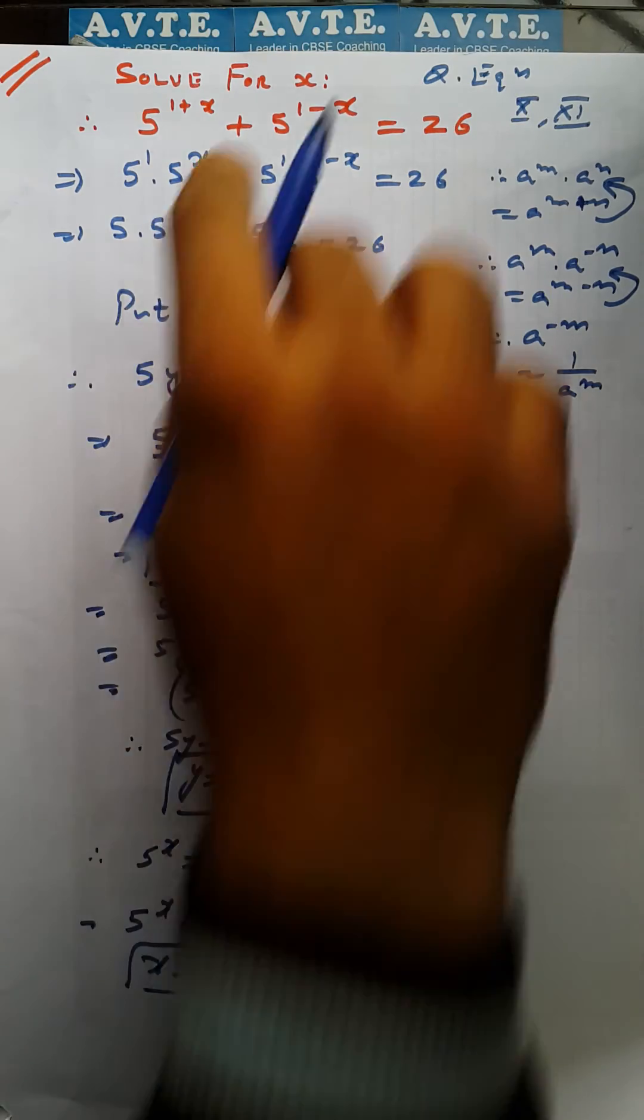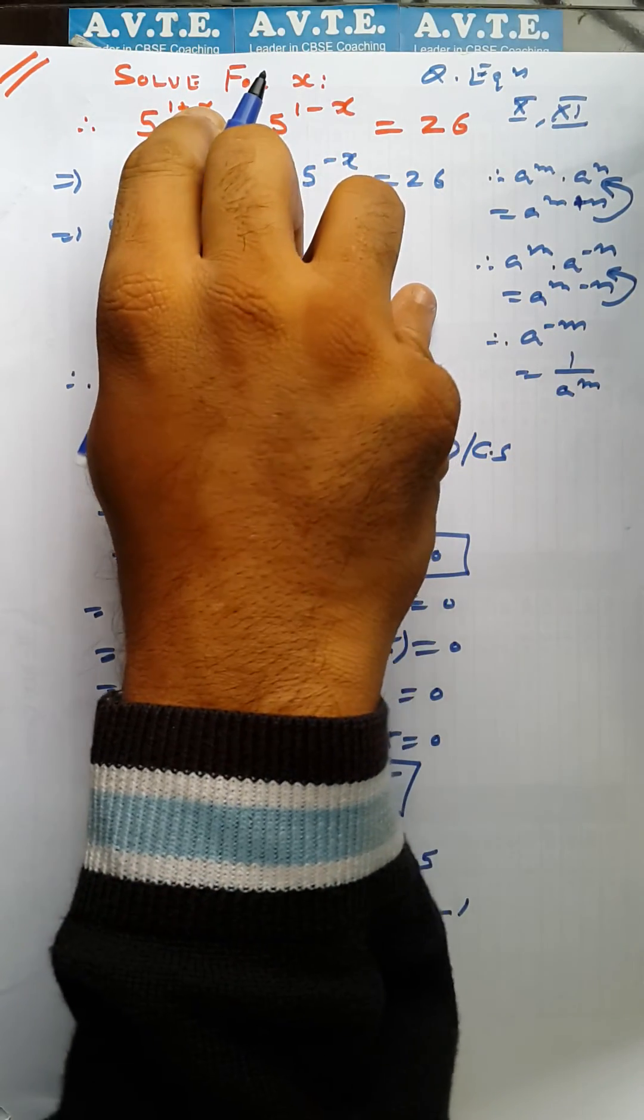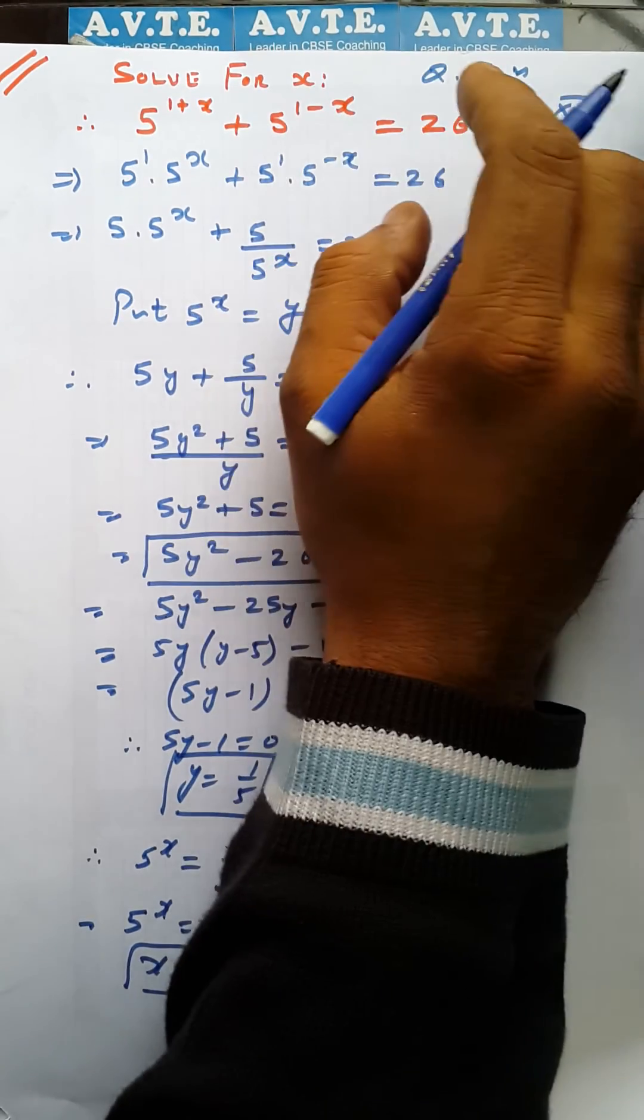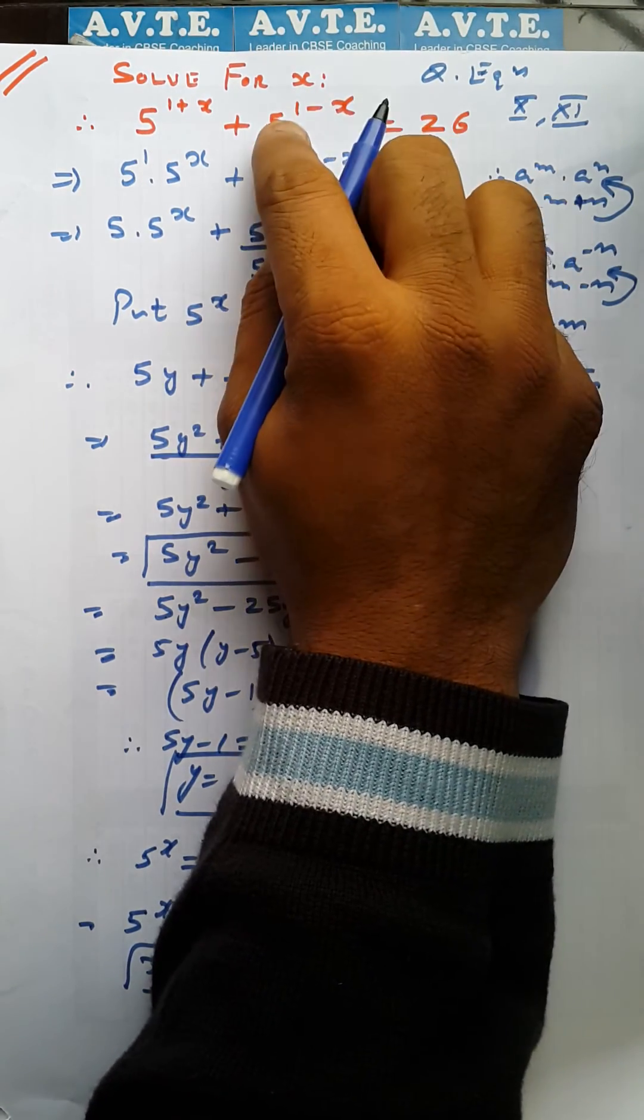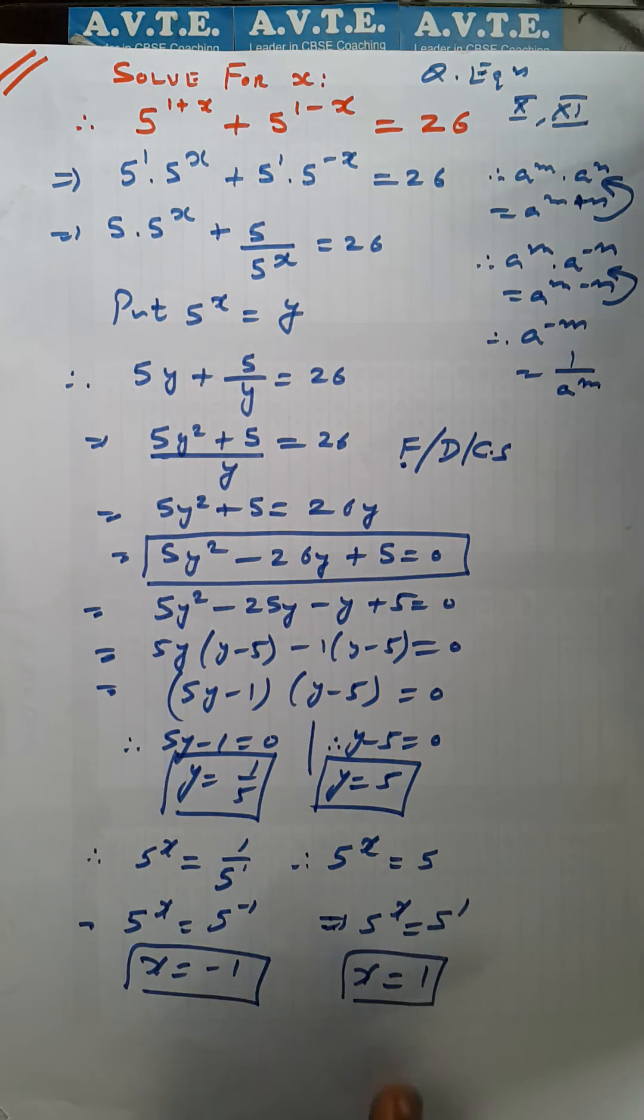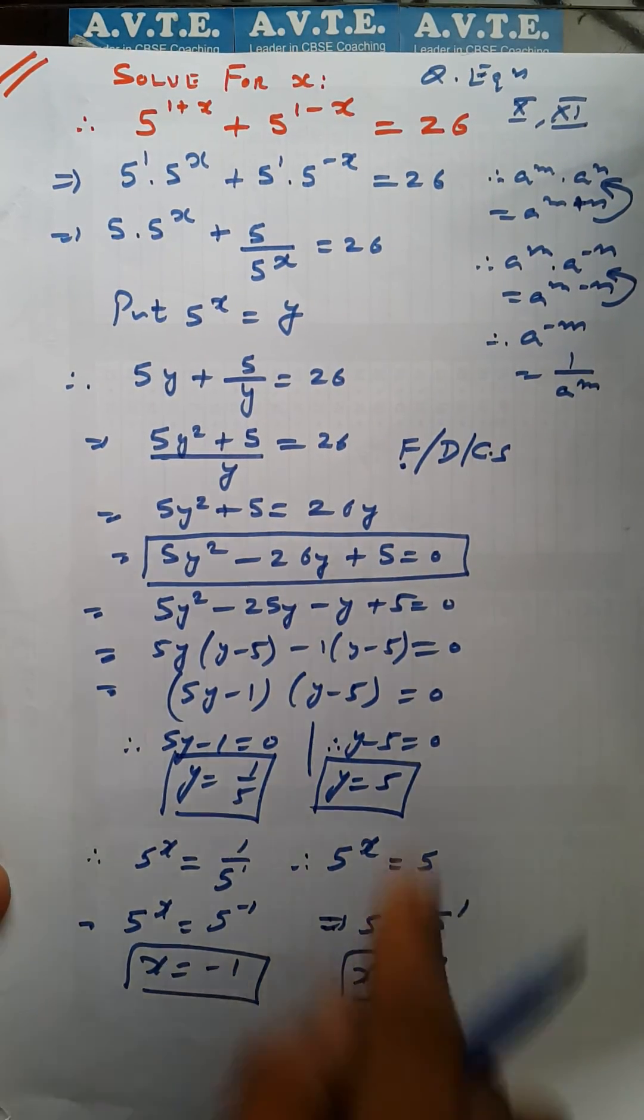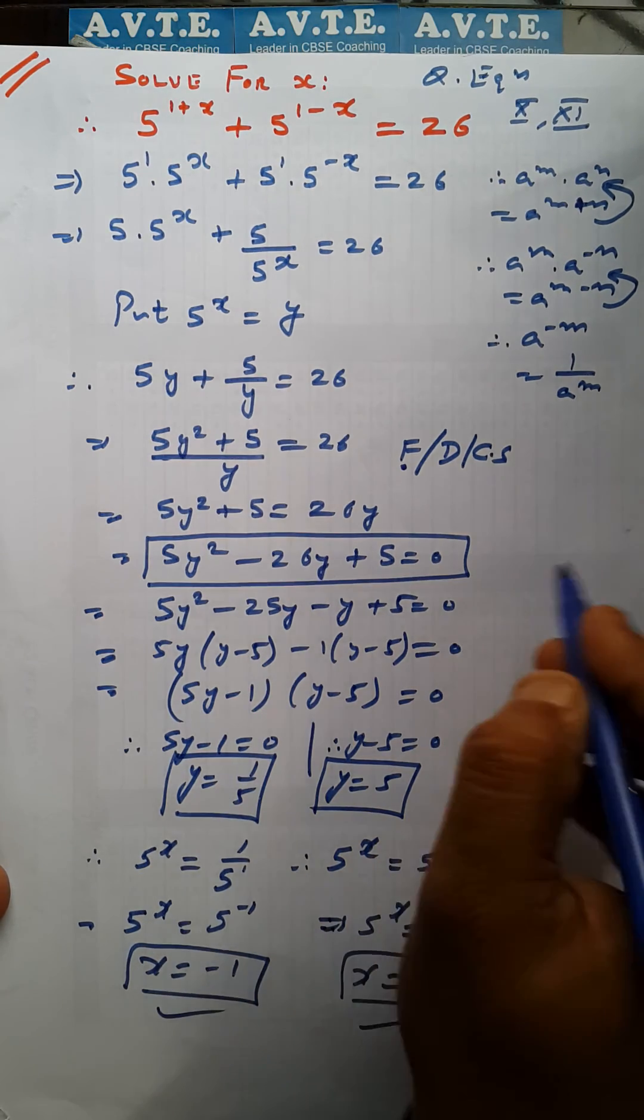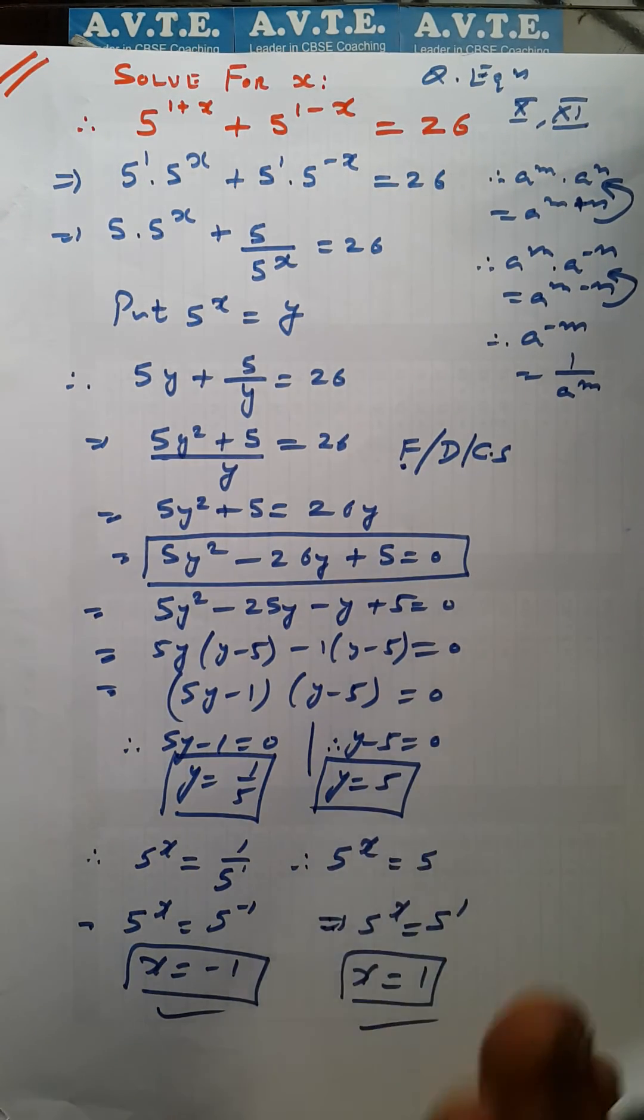So you can check. If you put minus 1, 5 raised to the power 0 is 1. If you put minus 1, this is 2. 5 raised to the power 2 is 25. 25 plus 1 is 26. And here if you put this answer as well, you can check it is verified. Both answers are correct. I hope you understood this kind of question.